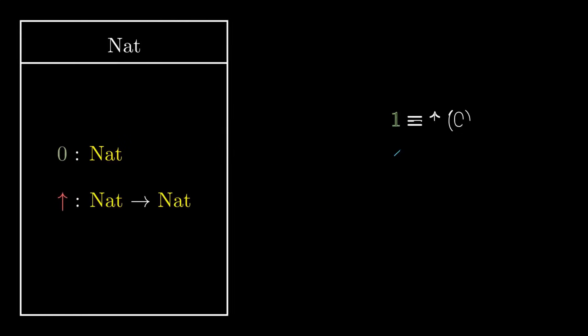So instead, we will just have two constructors: 0 of type NAT, and a function that can take a number and return another one. Then we can define the numbers 1, 2, 3, and so on by iterating over the function.